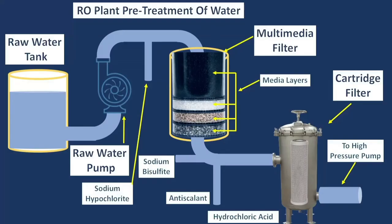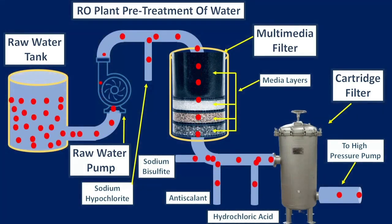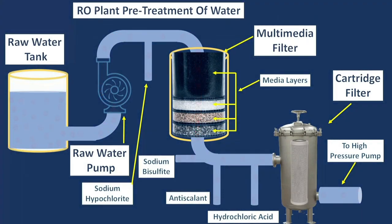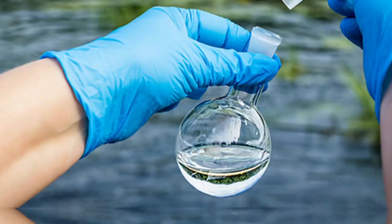Number 3 is Hydrochloric Acid. Hydrochloric acid is used to reduce the pH of the water before it reaches the membranes. The target pH range can differ depending on the water quality, location, and membrane type.